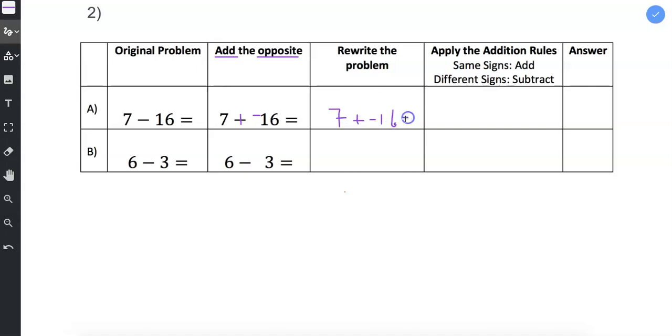So that means that this problem, 7 minus 16, is the same as 7 plus a negative 16. In this example, signs are different, and we subtract. And this is an example where I feel that it's important for me to show my work.